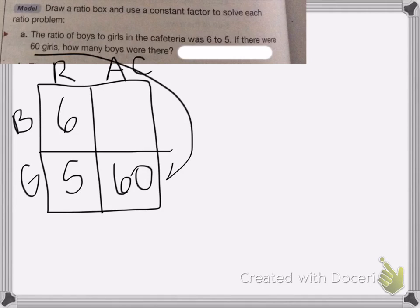Make sure to put those in the right boxes. It's not 60 boys, it's 60 girls. Okay? So I need to think 5 times what equals 60?